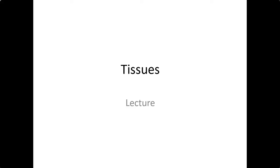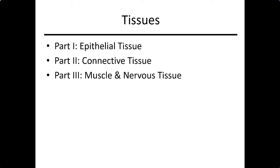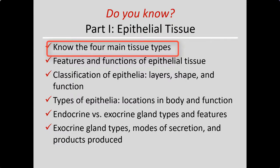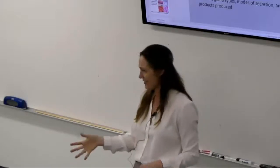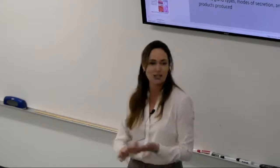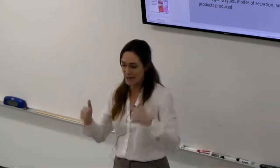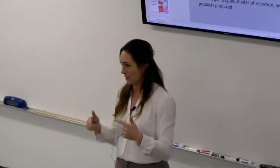Moving on to tissues. The four main tissue types are epithelial, connective, muscular, and nervous. For epithelial tissue, its functions include protection, secretion, transport, and diffusion.